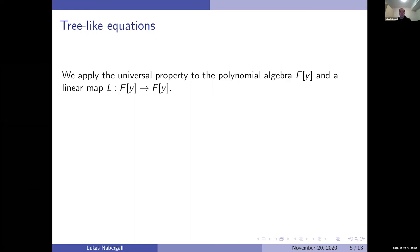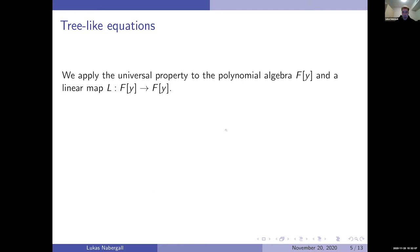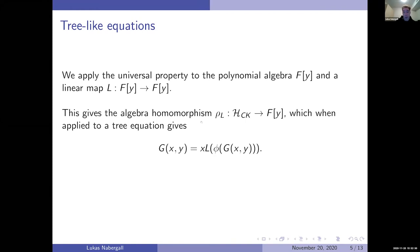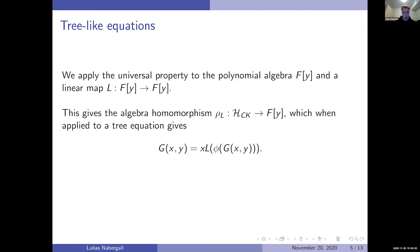We could apply this to any algebra, coalgebra, or bialgebra structure. We're going to apply it to the polynomial algebra with a linear map from the polynomial algebra to itself, giving an algebra homomorphism via the universal property from Connes-Kreimer to the polynomial algebra. We then apply this to the tree equation — applying it to both sides — and that gives a two-variable equation where B+ has become L, the linear map.